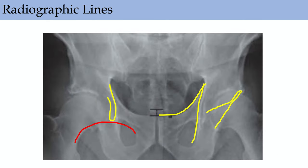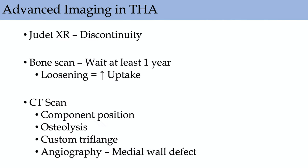Regarding hip radiography, the sacrococcygeal junction should be about three to five centimeters above the symphysis for a well-rotated view — the obturator foramina should be symmetric. You need to know your lines of the pelvis: the teardrop, Shenton's line, the ilioischial and iliopectineal lines, as well as anterior and posterior wall lines. For advanced imaging, we get Judet views for discontinuity or column evaluation. Bone scan after hip arthroplasty — usually wait about a year. CT scans are useful for component positioning, osteolysis evaluation, pre-op planning for custom tri-flanges, and CTA if there's a medial wall defect.